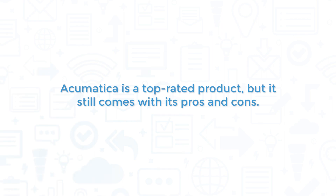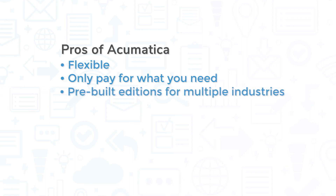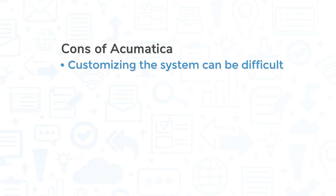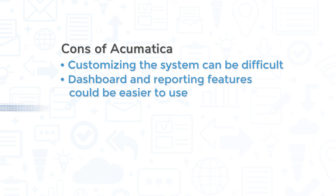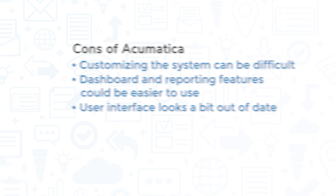Acumatica is a top-rated product, but it still comes with its pros and cons. One of the biggest pros is how flexible it is. Unlike many ERP systems, Acumatica is designed so that you only pay for what you need, and it offers different editions pre-built for multiple industries and company types. However, some users have reported that while the system is flexible, customizing it to your needs can be difficult. Others have also noted the dashboard and reporting features could be easier to use and look more modern.